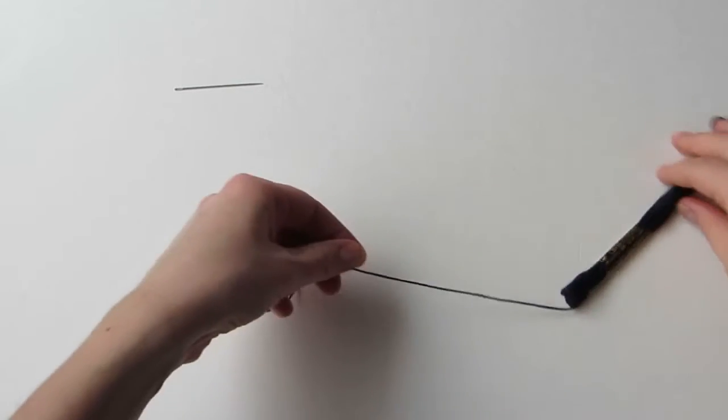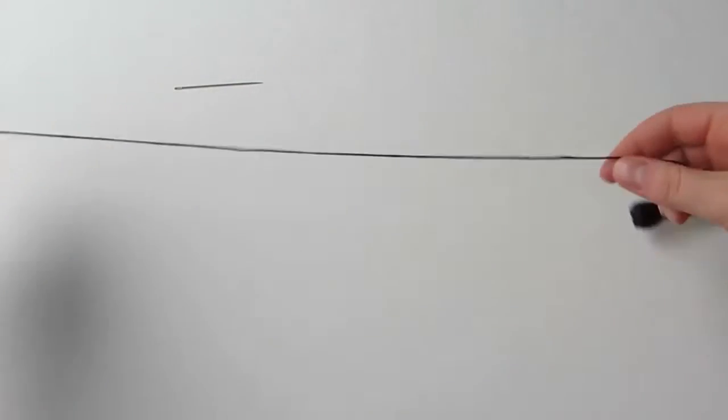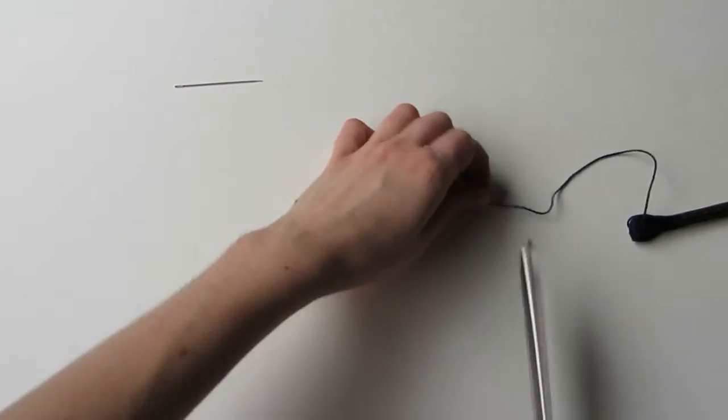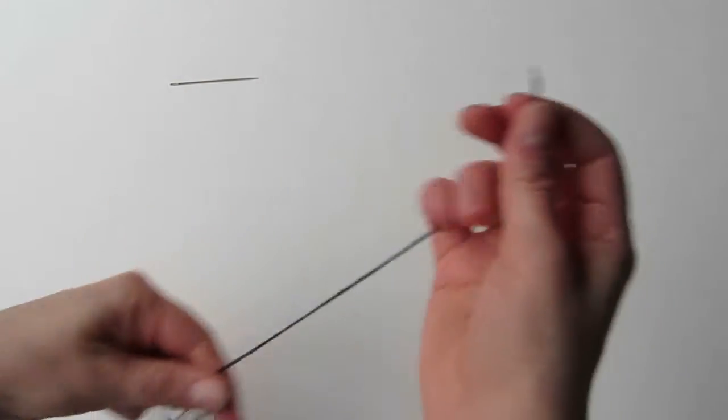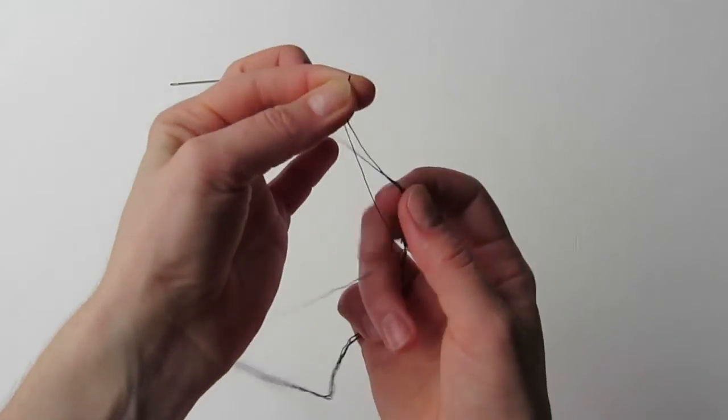Prepare your embroidery floss by pulling a length about 18 to 25 inches out of the skein and then cutting it off. Pull the floss apart into individual strands. This will help keep it from tangling later on once you're stitching.